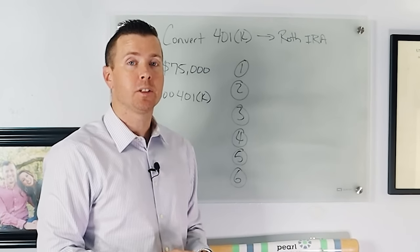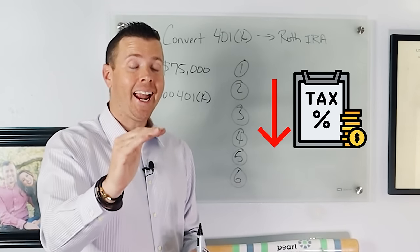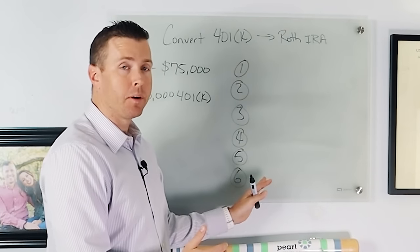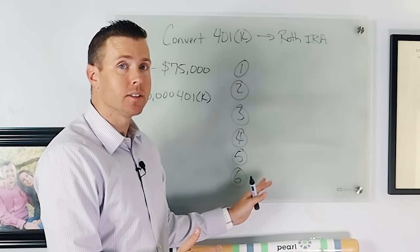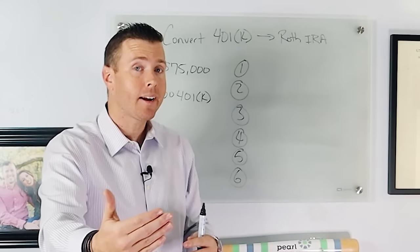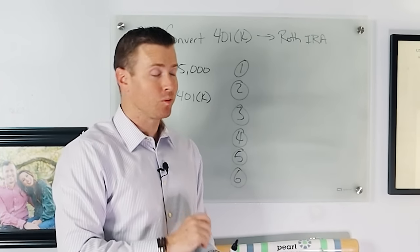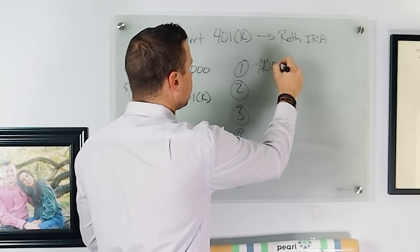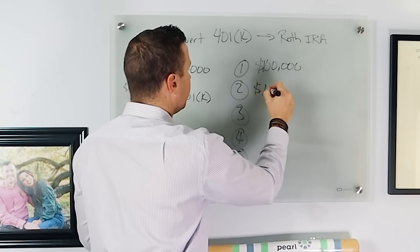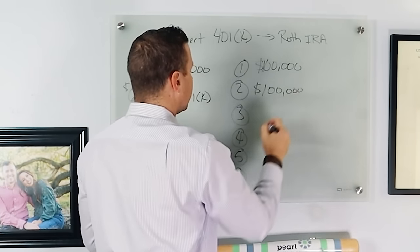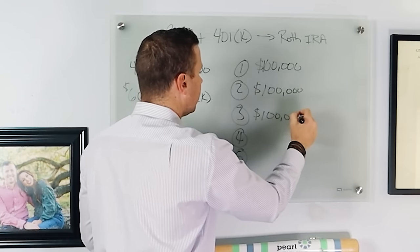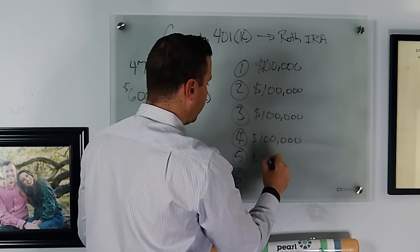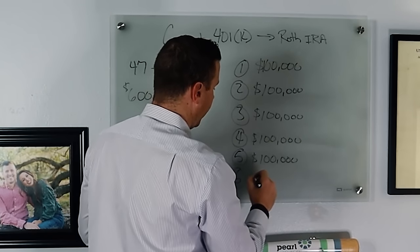We're going to roll over $100,000 per year. And the reason we're going to do that is because we want to keep our taxes low. And we want to structure this so that our five years, the reason we're going to do six separate Roth IRA buckets is so that we can keep track of those five-year conversions, right? That five-year rule. So the first bucket, we're going to put $100,000 in the second bucket, we're going to do the conversion of $100,000. The third bucket, another $100,000, fourth, fifth, and sixth.